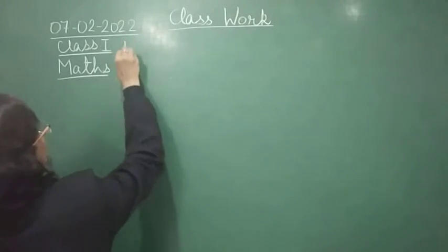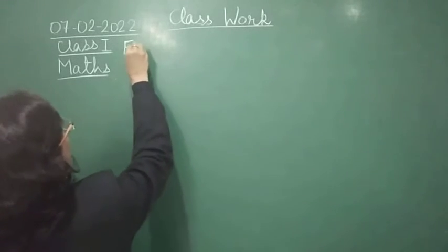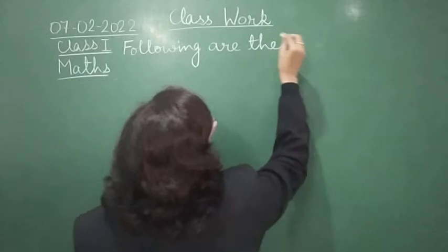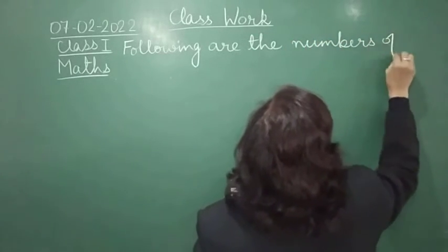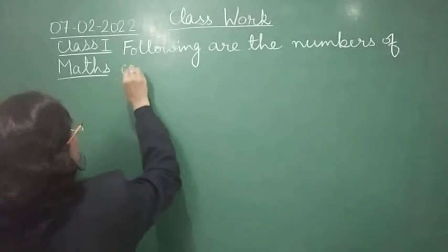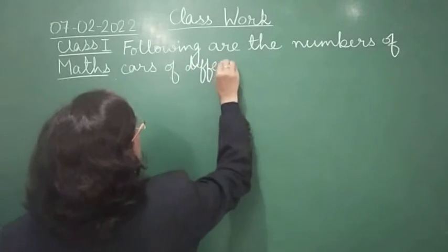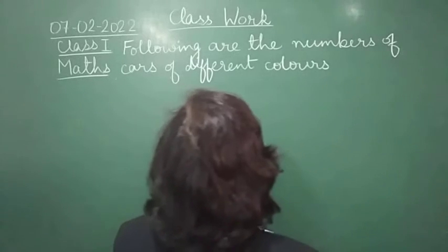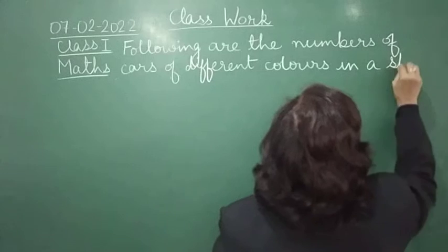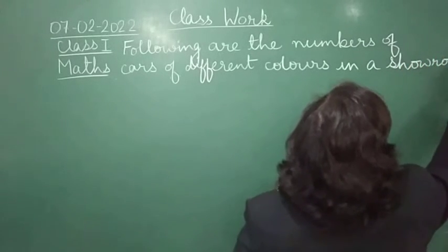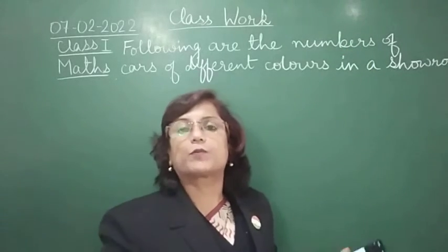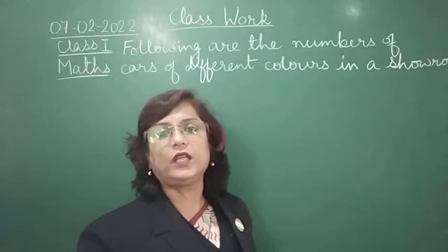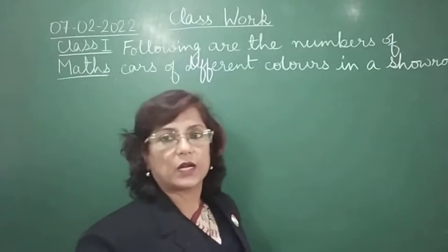So the following question — I need some space to write it. The question is: following are the numbers of cars of different colors in a showroom. A showroom is where cars are bought and sold, and people choose vehicles according to their choice of color. So here we have a showroom with cars of different colors.